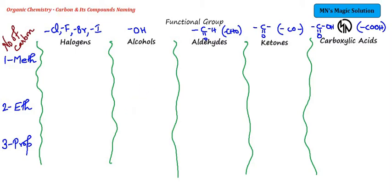Hi students, in the previous session we discussed about carbon compounds, naming of functional groups, including halogens, alcohols, aldehydes, ketones, and carboxylic acids. In today's session we are going to see a few more examples.